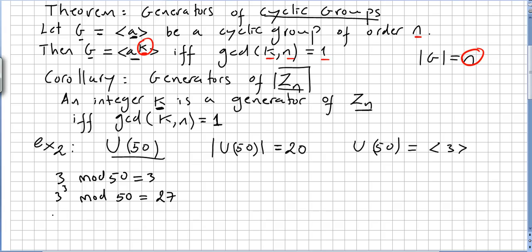Using the theorem, 3 to the power of 4 is useless because the greatest common divisor between 20 and 4 is not 1. To the power of 5, useless. The greatest common divisor of 20 and 5 is not 1. To the power of 6 is useless too. So 7 is a prime number, so the greatest common divisor of 7 and 20 is 1. So modulo 50, 3 to the power of 7, meaning 37 modulo 50, 37 is another generator of U50.